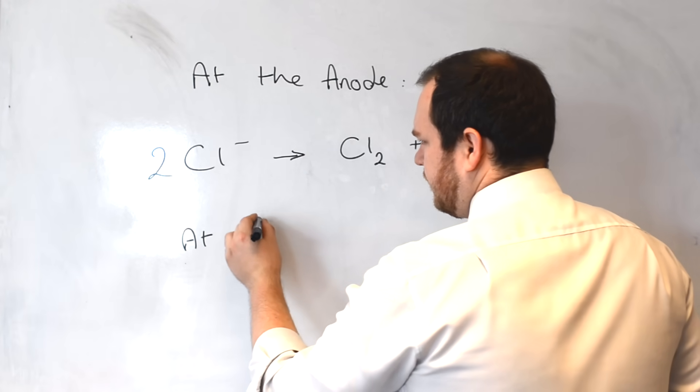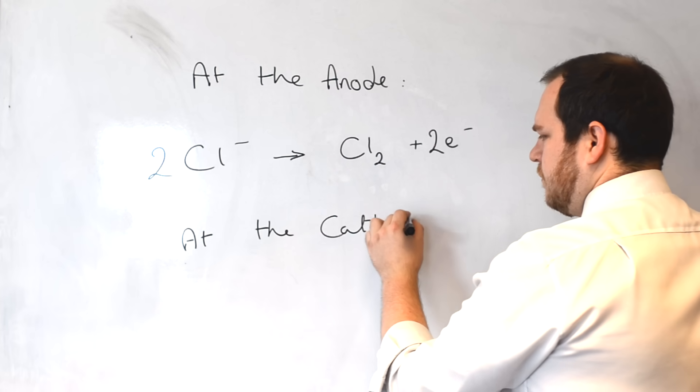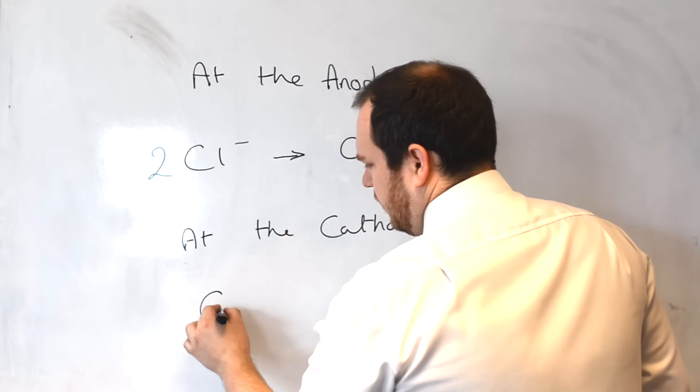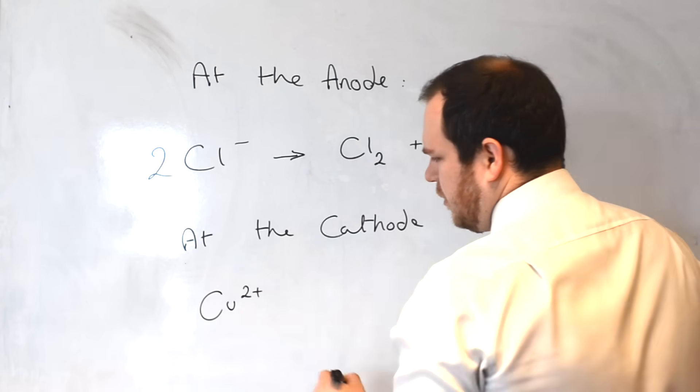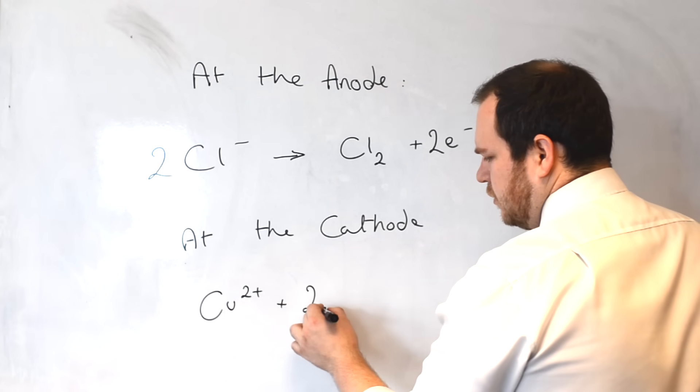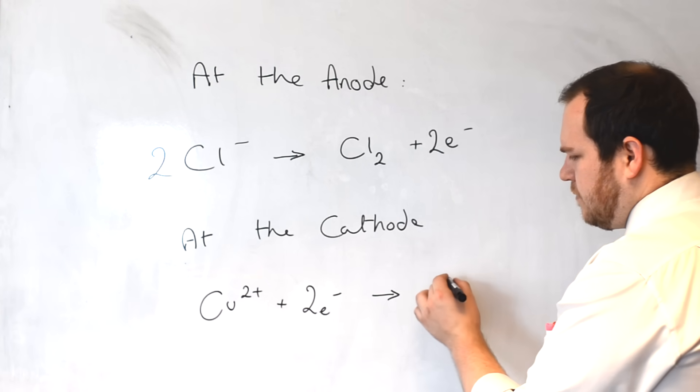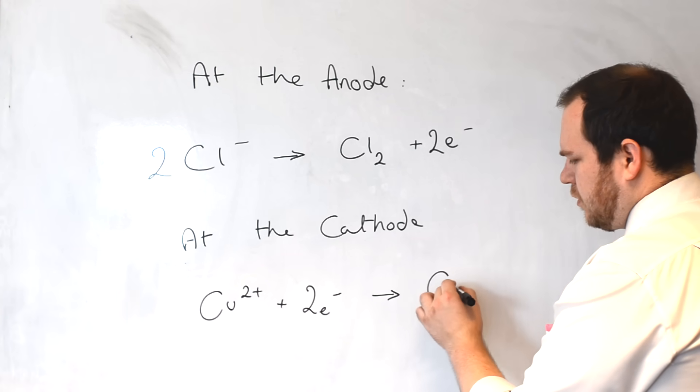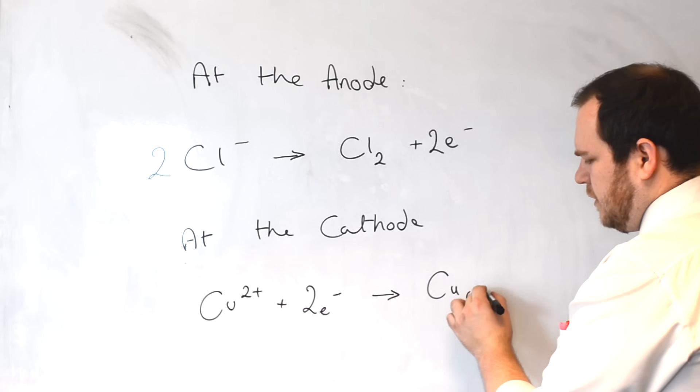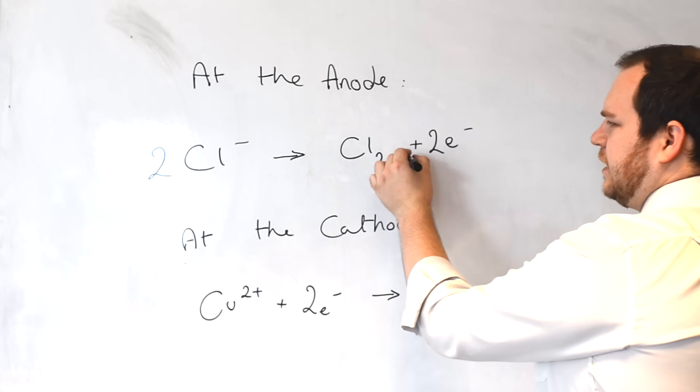At the cathode, copper 2 plus ions are drawn towards the negative charge. Here they gain 2 electrons. This in turn forms copper metal as a solid. The diatomic chlorine forms as a gas.